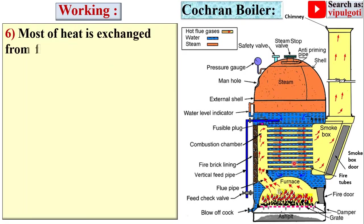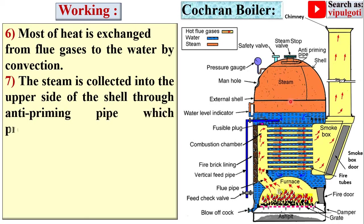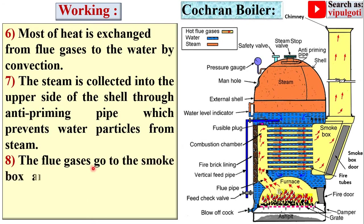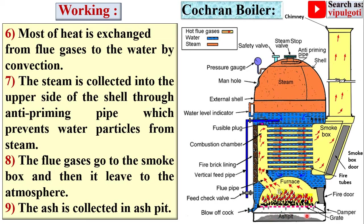Most of the heat is exchanged from the flue gases to the water outside the tubes by convection. Steam is collected on the upper side of the shell through an anti-priming pipe, which prevents water particles from entering the steam. The flue gases then go to the smoke box and leave to the atmosphere. Ash is collected in the ash pit at the bottommost portion of the boiler shell, since coal is converted to ash after combustion.